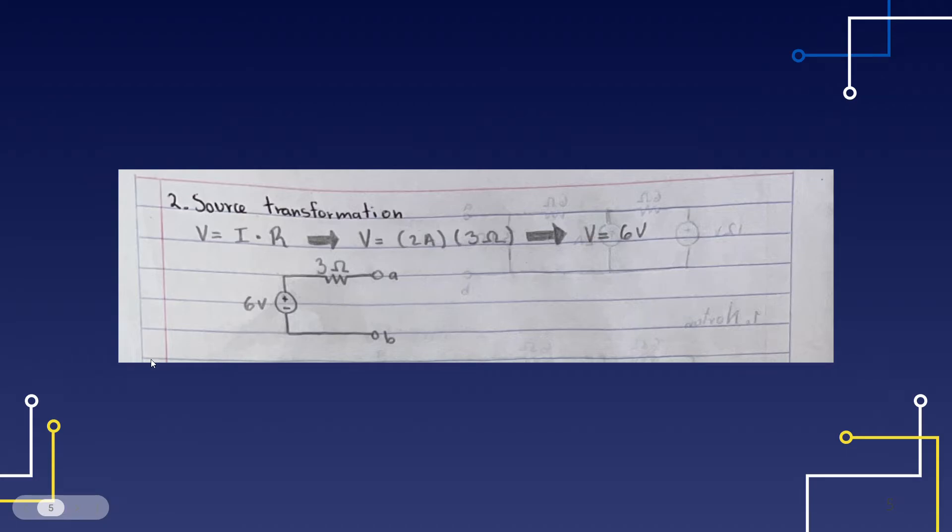We use that knowledge to calculate our voltage source, which will be our current source and our resistor multiplied. That's Ohm's law. That will give us 6 volts, and that will be our Thevenin equivalent circuit. It will be a 6 volt voltage source in series with a 3 ohm resistor.